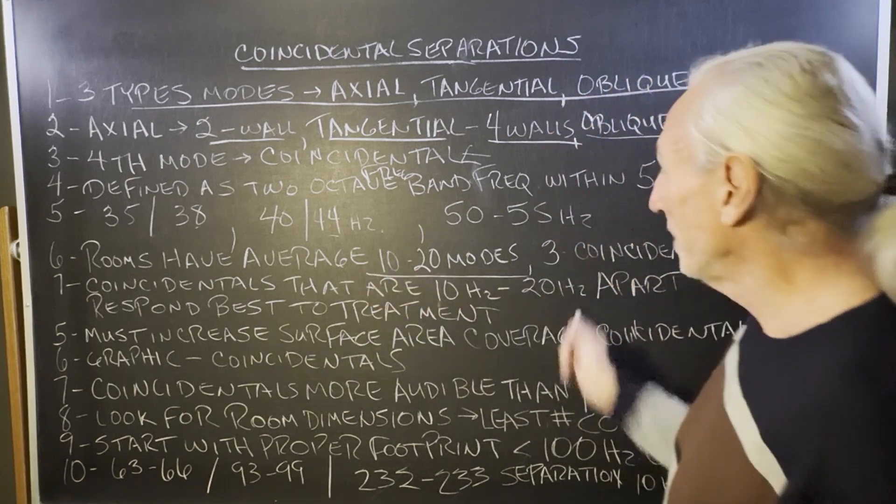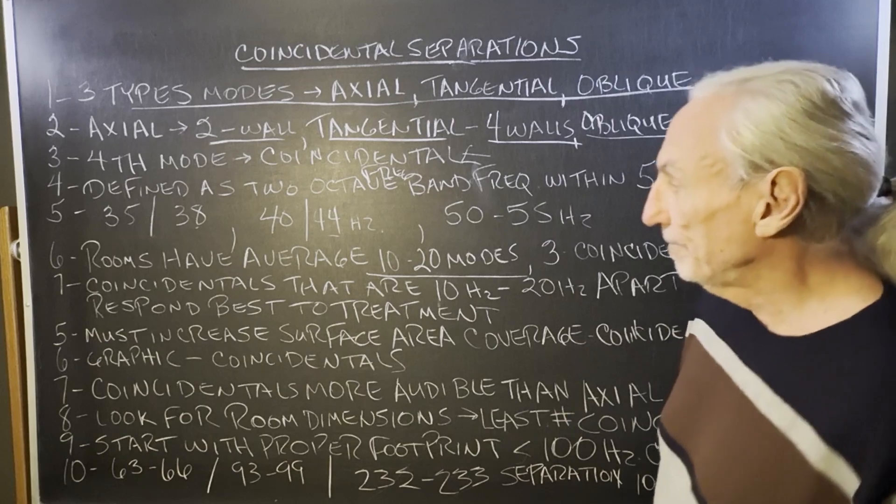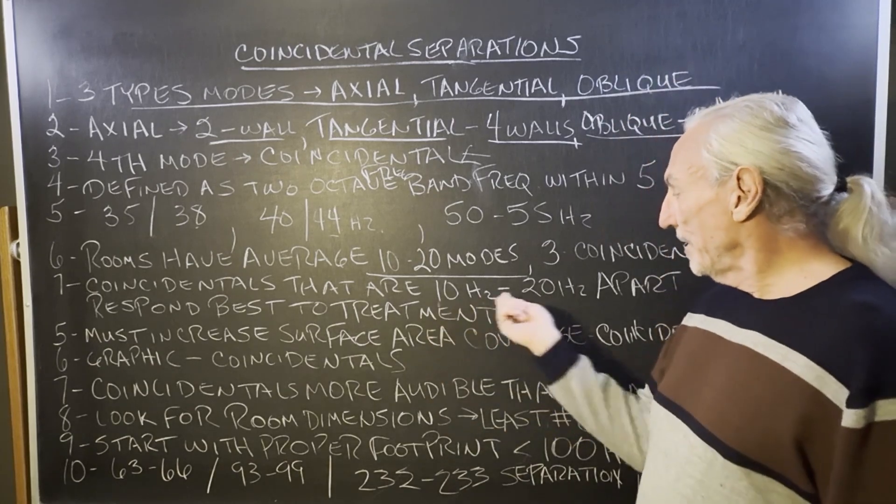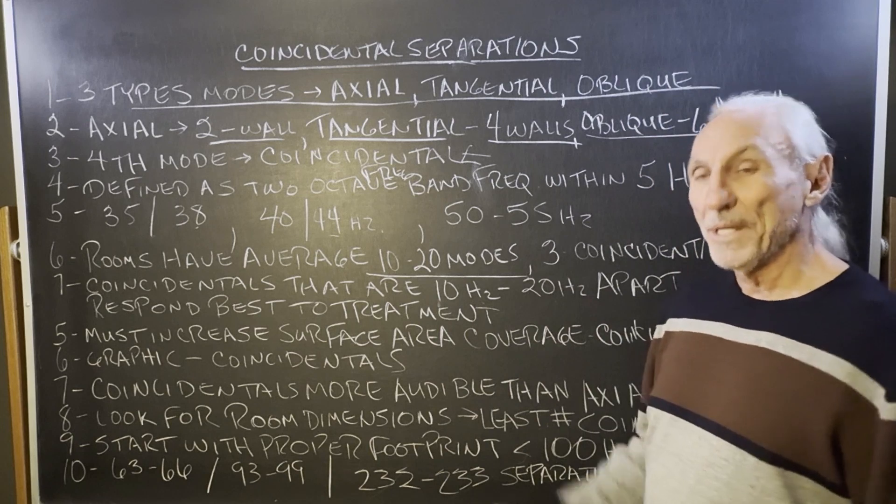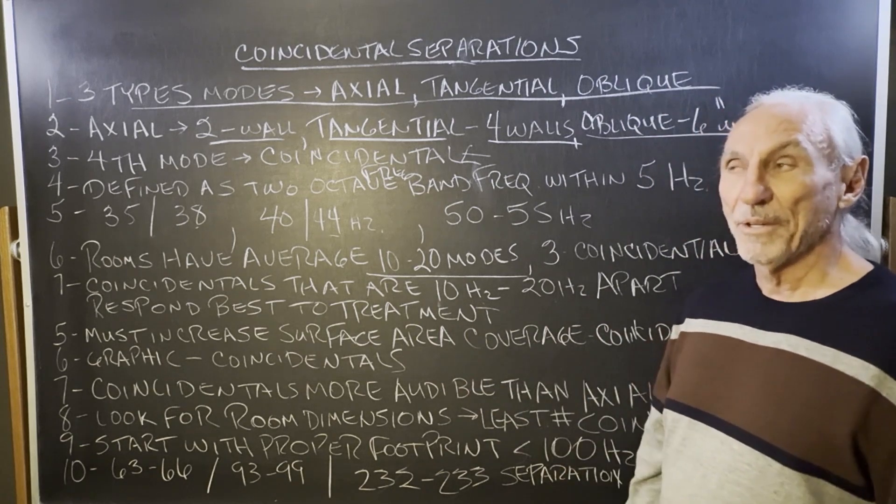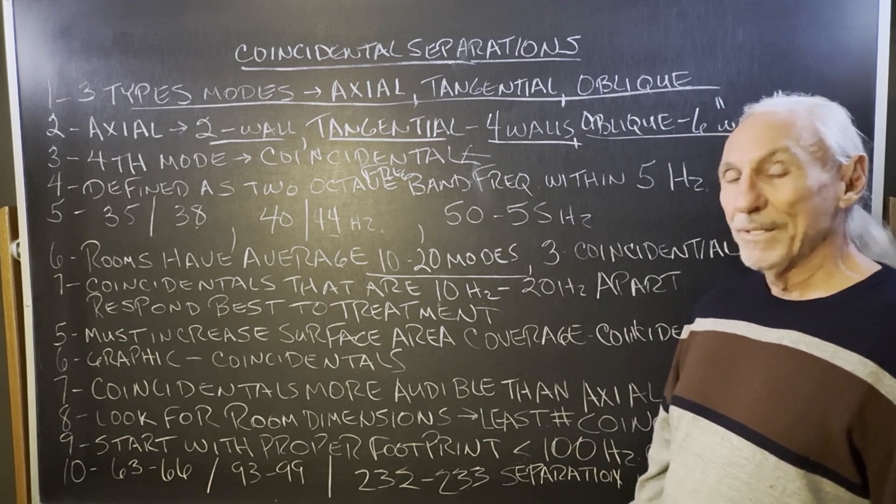Rooms have an average we see of 10 to 20 modes, three to four coincidentals. So coincidentals that are 10 to 20 hertz apart are much easier to treat than those that are clustered together. I saw a room the other day with nine coincidentals. Got to get a new room.